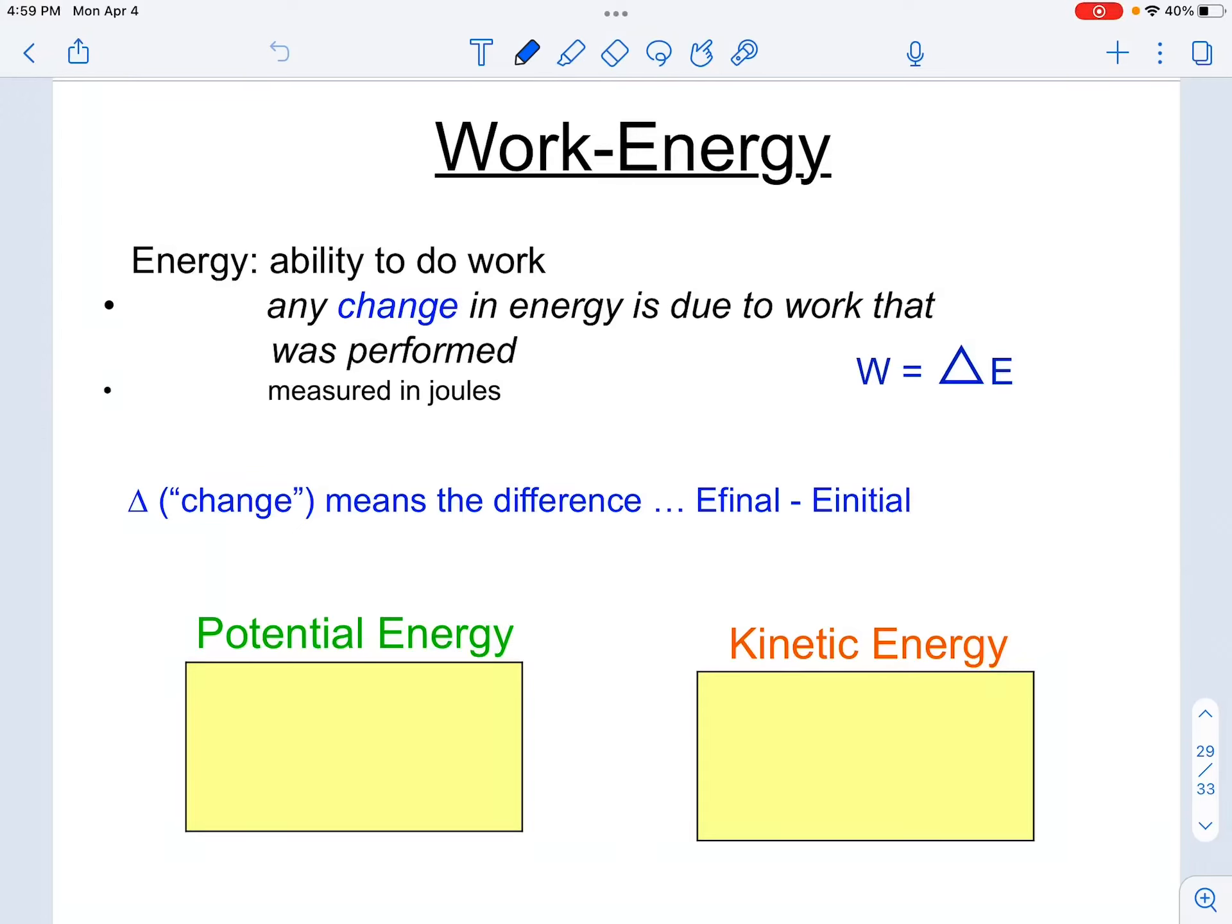All right, we are going to talk about something called work energy theorem. We mentioned before that energy is defined as the ability to do work. In order for me to perform some sort of physical work, I have to have energy because that energy is then going to be transferred into the work that was done. Or I could say the work that I did is responsible for the change in energy that I experience. The work that I perform on an object is responsible for the change in energy that the object experiences. And so this is what we call the work energy theorem.